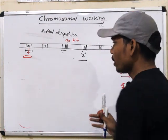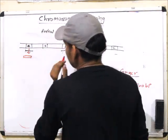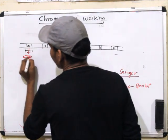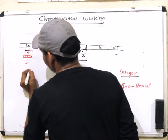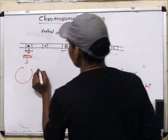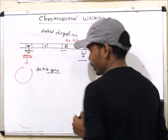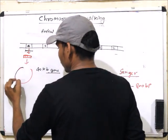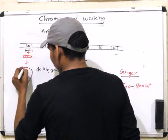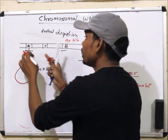So we use chromosomal walking. Suppose this sequence is known — we digest with different restriction endonucleases and then subclone into the cosmid library. Cosmid vectors have the ability to carry 40 kb of a gene of interest. Cosmids are another topic on their own. This fragment is cloned and subcloned into the cosmid library and then sequenced.